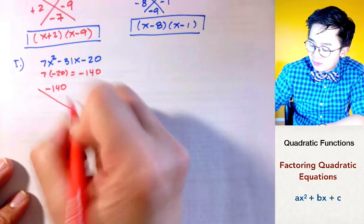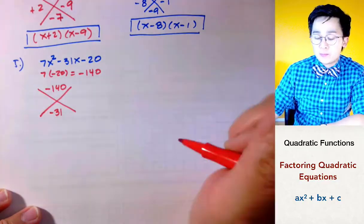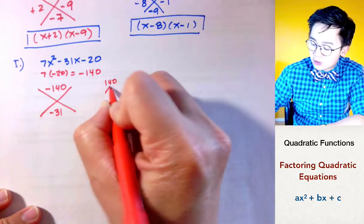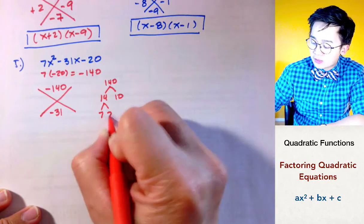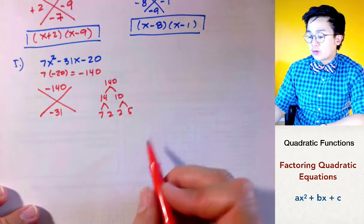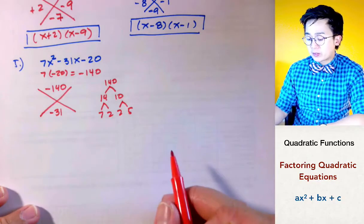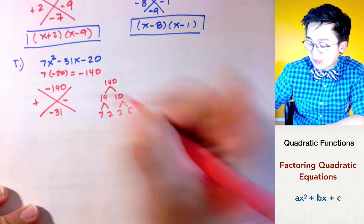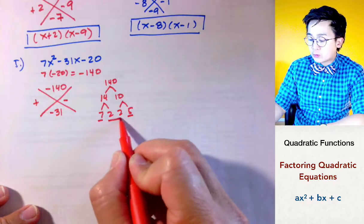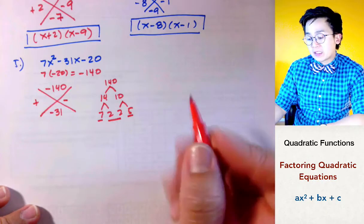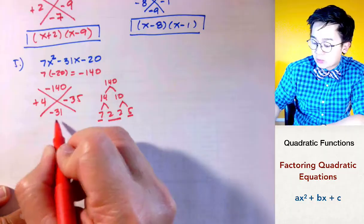We need to find the factors of negative 140 that give us negative 31 when added. Since it's a big number, the best approach is to use a factor tree. 140 breaks into 14 and 10; factoring further gives 7 and 2, and 2 and 5. From the prime factorization, I can see that 7 times 5 is 35 and 2 times 2 is 4. So the factors are negative 35 and positive 4, which add up to negative 31.